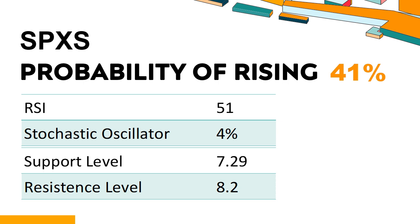Trend Outlook: SPXS has a 41% probability of rising stock price. When the probability of rising is lower than 50%, the probability of falling is relatively high. Combining multiple technical analysis indicators, SPXS has 5 bullish signals and 3 bearish signals. SPXS's short-term support level is 7.35; if it falls below 7.35, it will have a chance to test 7.29. The short-term resistance level is 7.99; if it breaks through 7.99, it will look up to 8.2.